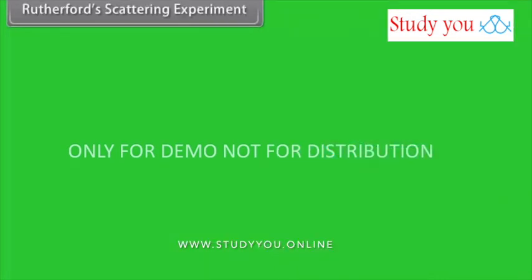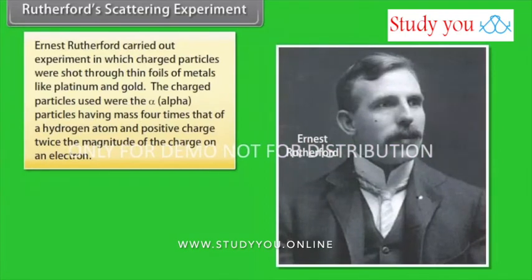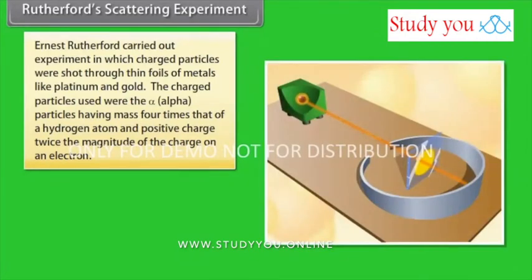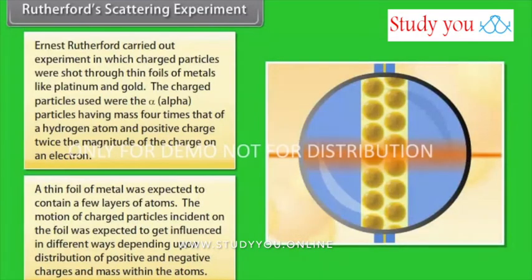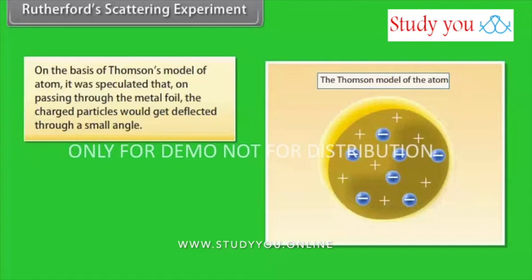Rutherford Scattering Experiment. Ernst Rutherford carried out an experiment in which charged particles were shot through thin foils of metals like platinum and gold. The charged particles used were alpha particles having mass four times that of a hydrogen atom and positive charge twice the magnitude of the charge of an electron. A thin foil of metal was expected to contain a few layers of atoms. The motion of charged particles incident on the foil was expected to get influenced in different ways depending upon distribution of positive and negative charges and mass within the atoms. On the basis of Thomson's model of atom, it was speculated that on passing through the metal foil, the charged particles would get deflected through a small angle.